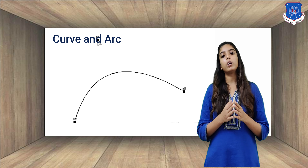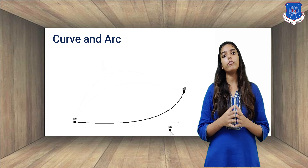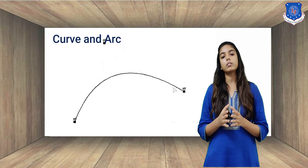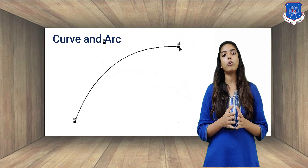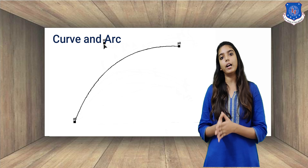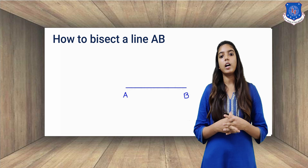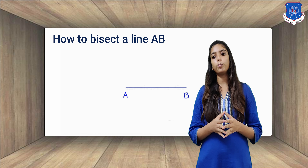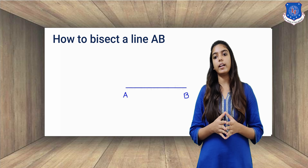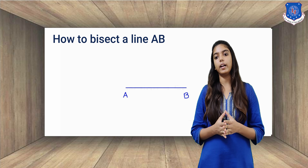There are also other forms of lines — curves and arcs are also forms of lines. Now we will see how to bisect a straight line.